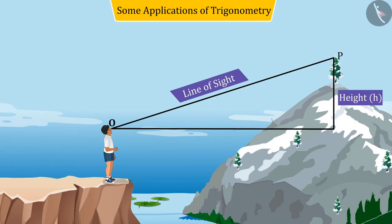So, we can say that the point from which the object P is seen is called the point of vision.